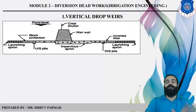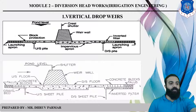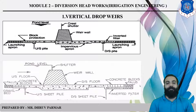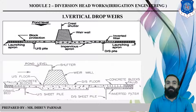The first type is Vertical Drop Weir. This is the diagram of a Vertical Drop Weir. In this Vertical Drop Weir, solid constructions are made. There are upstream and downstream sides. On the upstream side, a launching apron and block protection are provided. On the downstream side, a launching apron but with an inverted filter is provided instead of block protection. That is called a Vertical Drop Weir, and all parts are constructed by concrete or masonry structure.